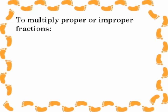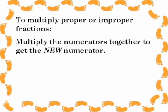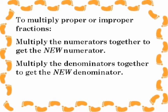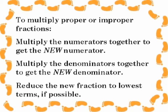To multiply proper or improper fractions, multiply the numerators together to get the new numerator. Multiply the denominators together to get the new denominator. Reduce the new fraction to lowest terms if possible.